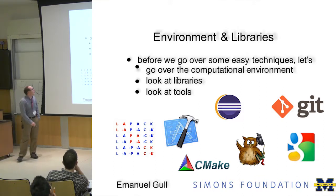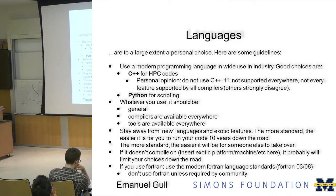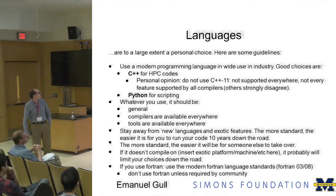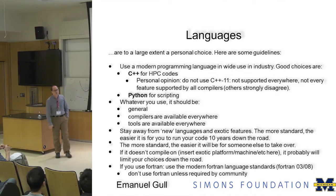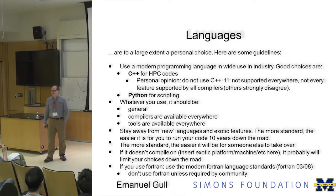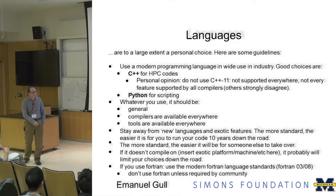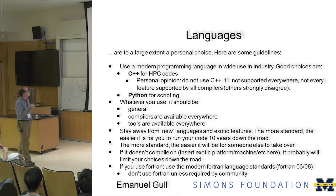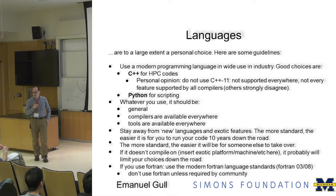The first and most important thing to remember is: in order to get clean code, the first thing you do is not write code. The best way to not write code is to use libraries. But before libraries, let me quickly talk about programming languages. This is a topic that provokes a lot of responses. To a large extent it's a personal choice and a choice of field. Quantum chemistry has always used Fortran. A lot of physicists use C++ rather than Fortran, and there's a lot of Python.